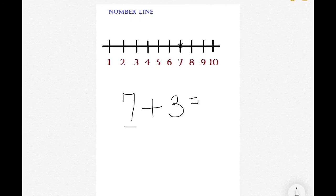If we're at 7 on our number line, we go 8, 9, 10, which is 3 positions. So our answer would be 10.